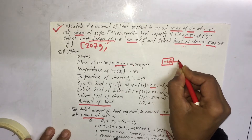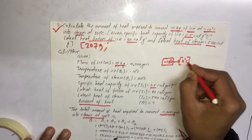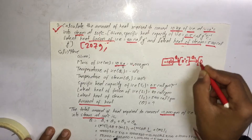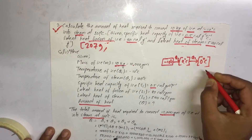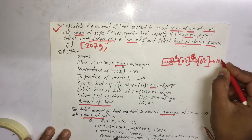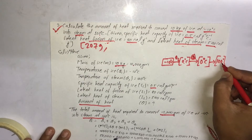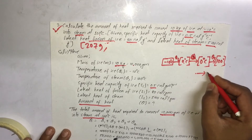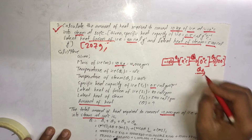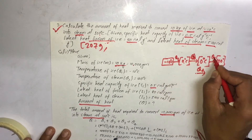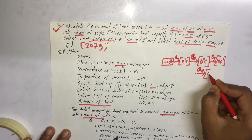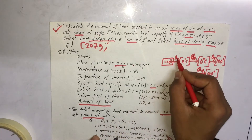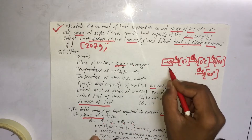We change the temperature from minus 10 degrees Celsius to 0 degrees Celsius — that is Q1. Then at 0 degrees Celsius, ice melts to water — that is Q2. Then water at 0 degrees Celsius is heated to 100 degrees Celsius — that is Q3. Then water at 100 degrees Celsius is converted to steam — that is Q4. The total heat is Q1 plus Q2 plus Q3 plus Q4.